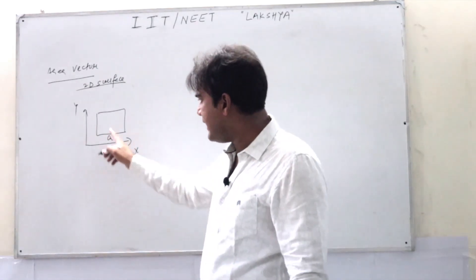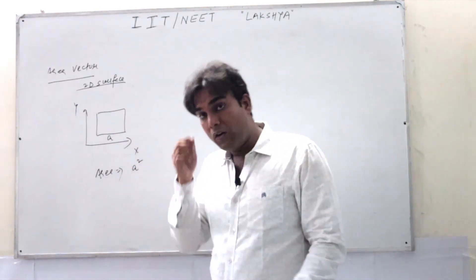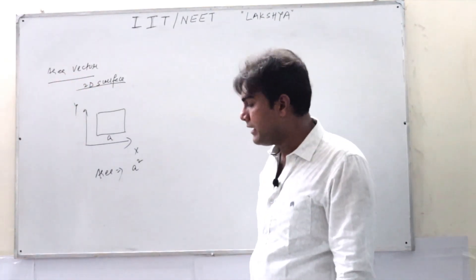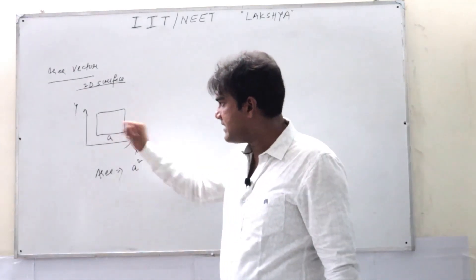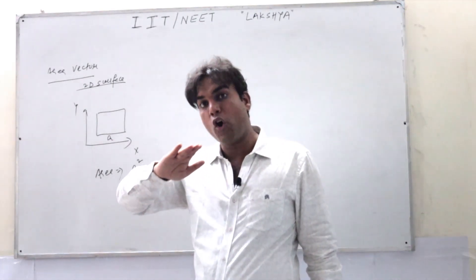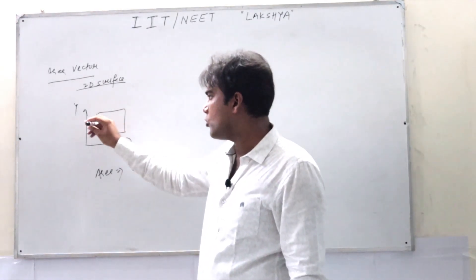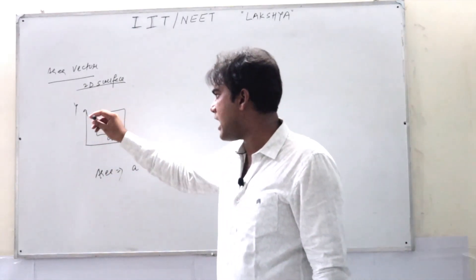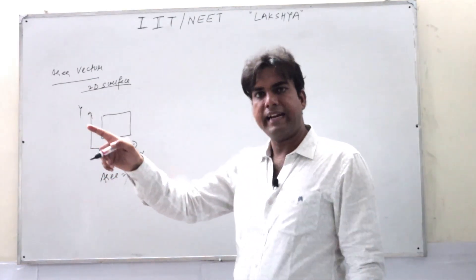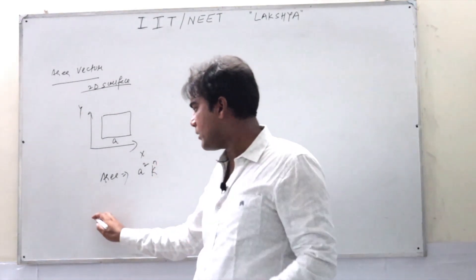So if we need to write the area vector for this square, the area magnitude is a² — now we need to give it a direction also, because we are taking area as a vector quantity. The direction of the area is always given as the normal vector to that area. The normal vector to this area is the outward normal. Here the outward vector is along the z-axis, and the unit vector along the outward z-axis is k-cap. So the area vector is a²·k-cap.